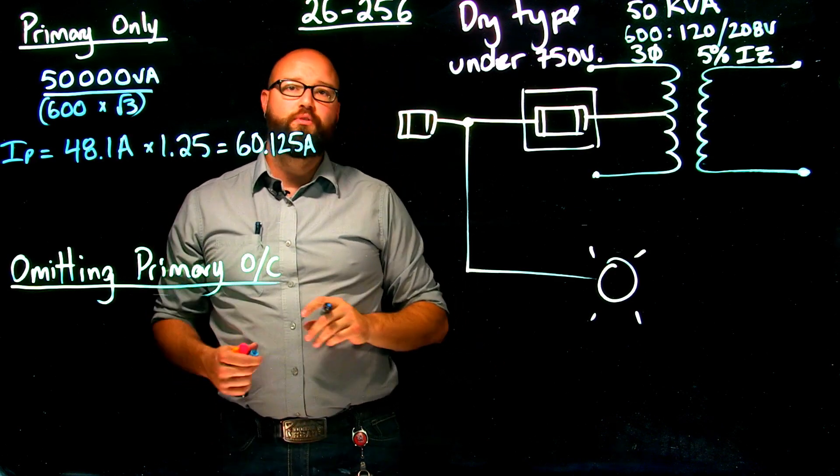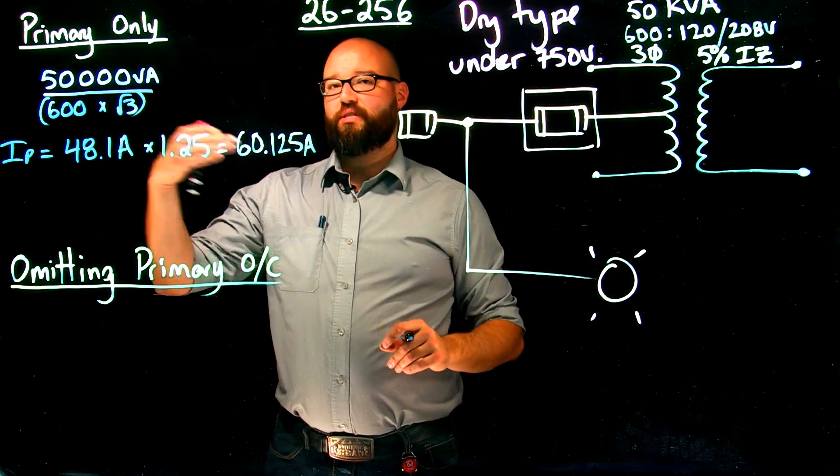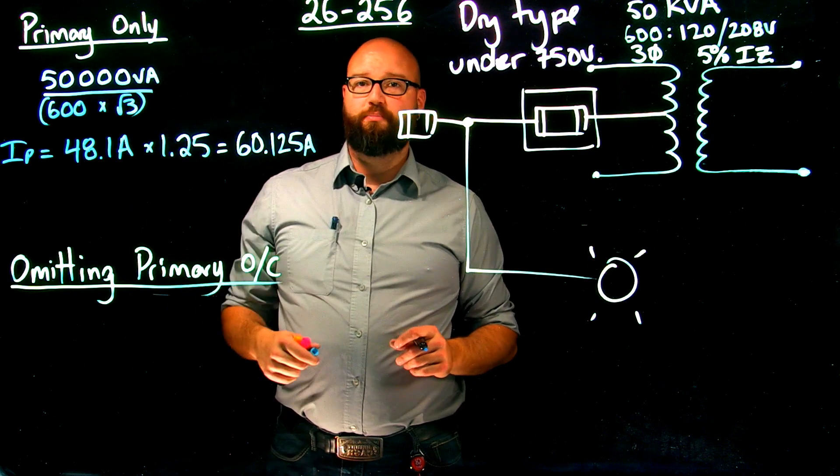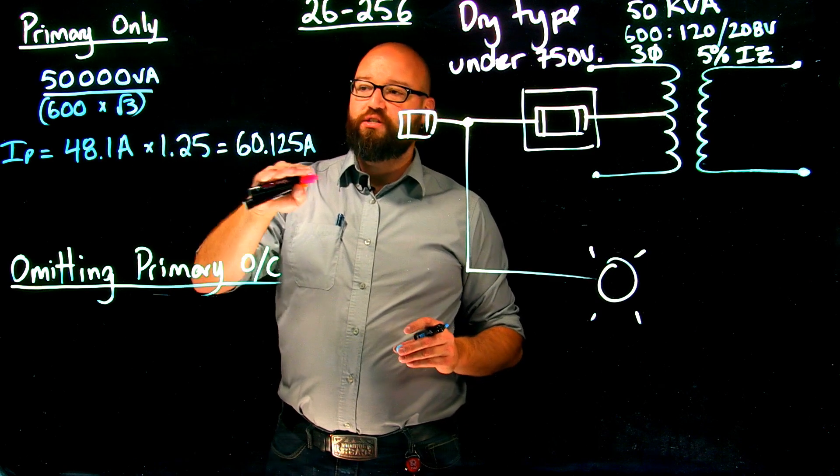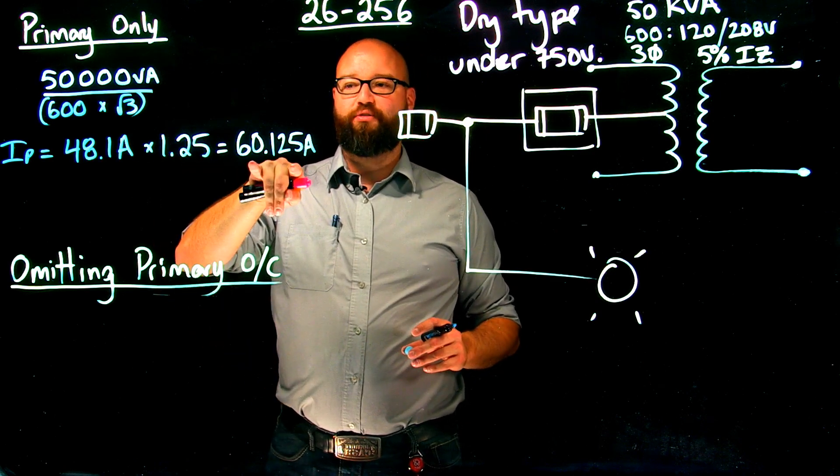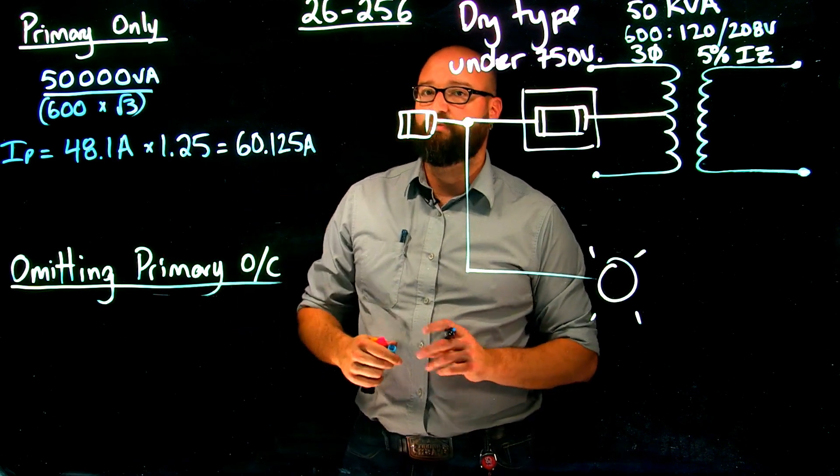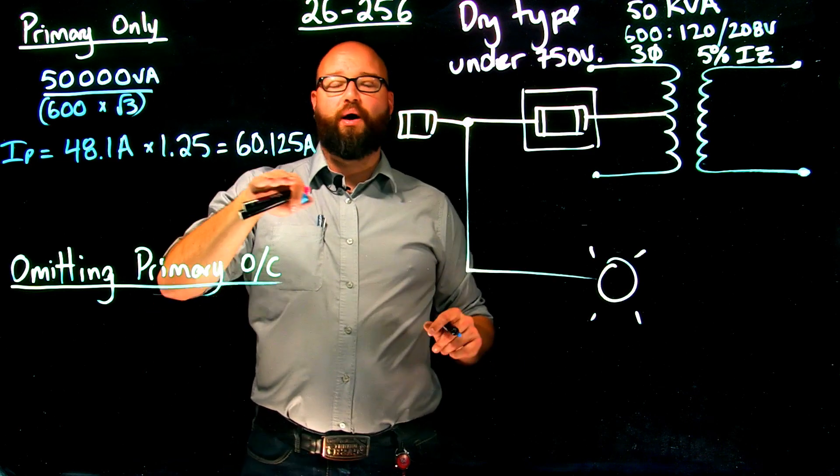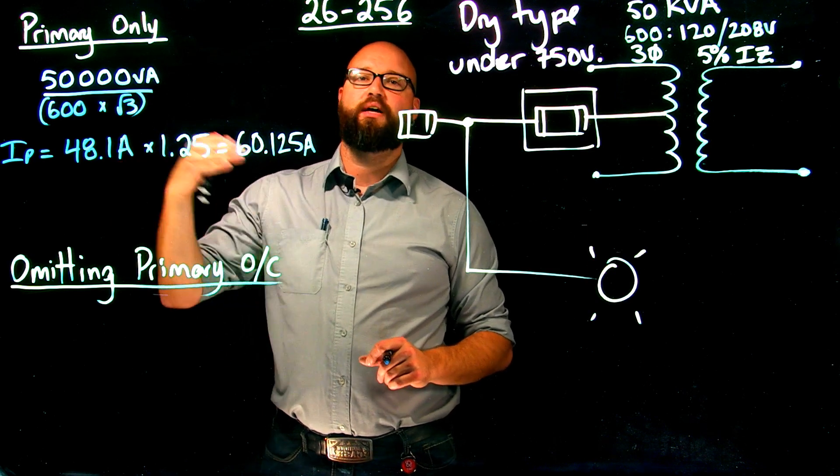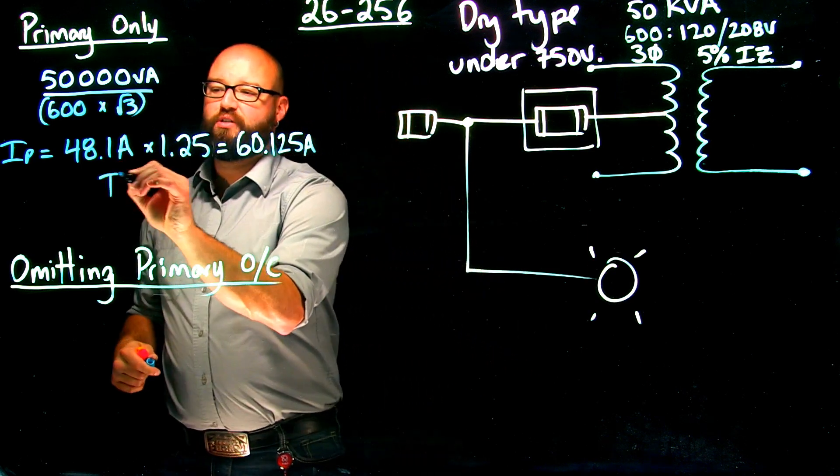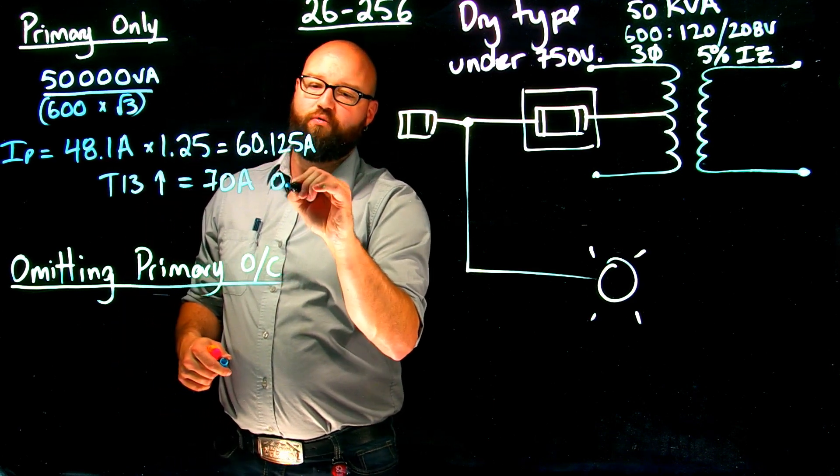Now subrule two deals with what happens when we omit that primary protection. We have to skip ahead to subrule three. This little part is buried in subrule three. It actually tells me in subrule one, if there is no overcurrent setting from table 13 at this right here, we are allowed to go up to the next available size. So it's a little bit buried in the actual rule, we have to read a little bit. But if there is no overcurrent rated at 125% of rated primary, we are allowed to go up to the next available size. So table 13, we're going to go up,